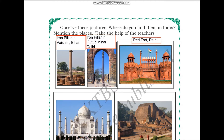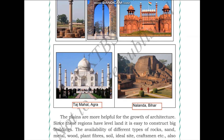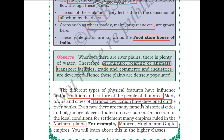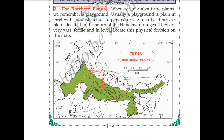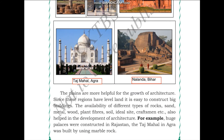Observe these pictures - the first two belong to the Ashokan empire: the first is in Bihar in the place called Vaishali, and the next is Qutub Minar in Delhi. Next we have the Red Fort, which is in Delhi, and the Taj Mahal in Agra. Finally, we have the ruins of Nalanda, which is in Bihar. Almost all of them are located near the northern plains.